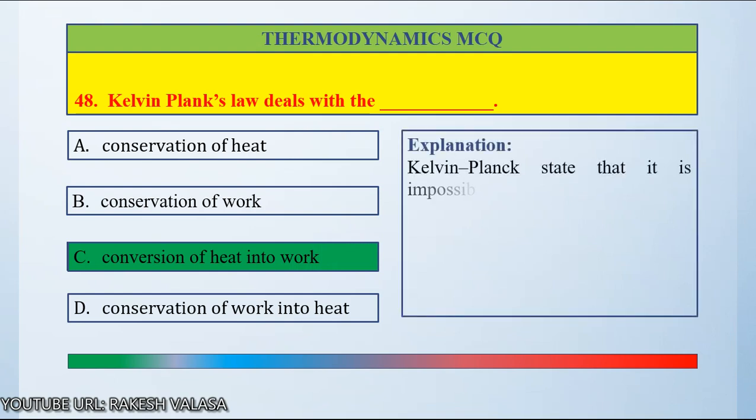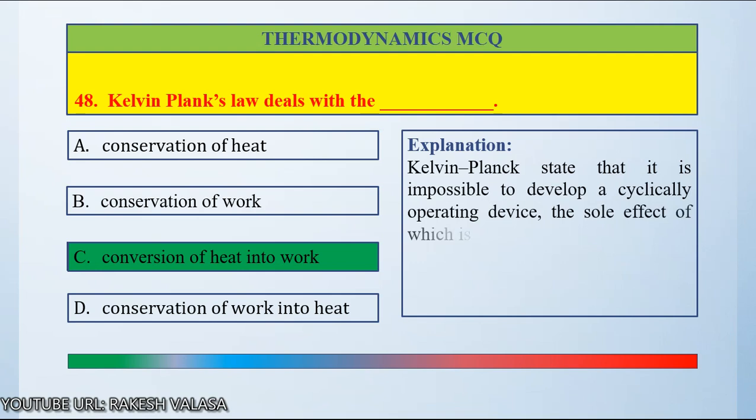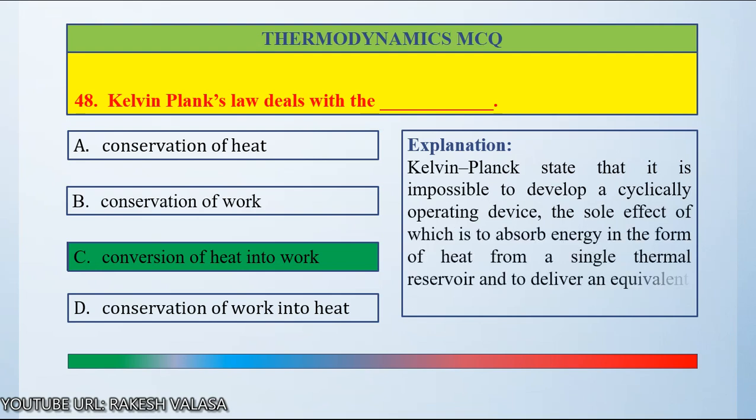Kelvin-Planck states that it is impossible to develop a physically operating device the sole effect of which is to absorb energy in the form of heat from a single thermal reservoir and to deliver an equivalent amount of work. So the answer is option C, conversion of heat into work.